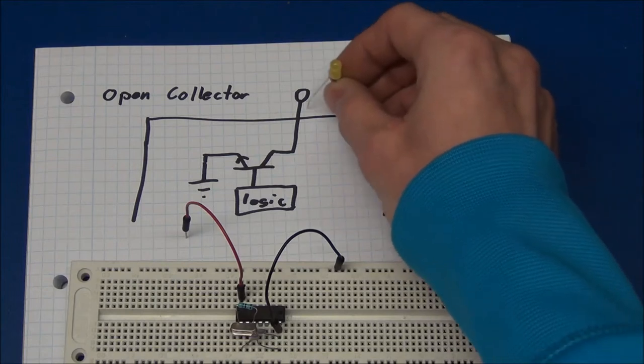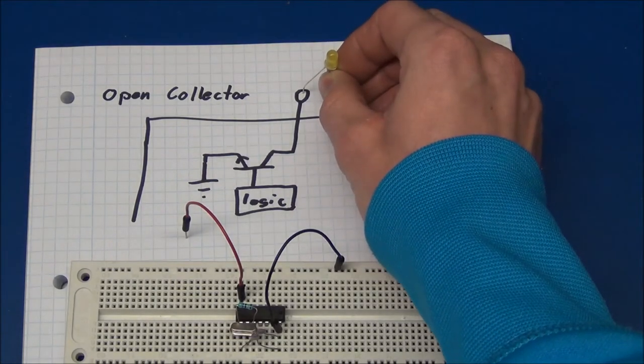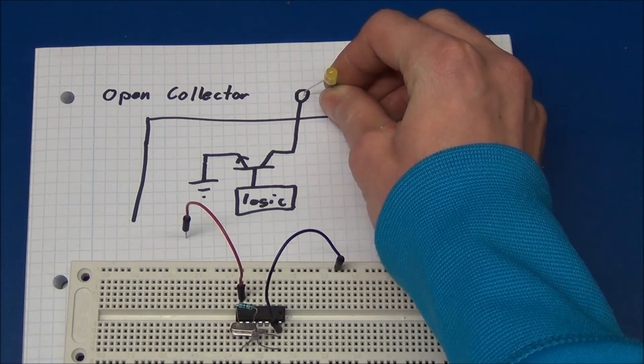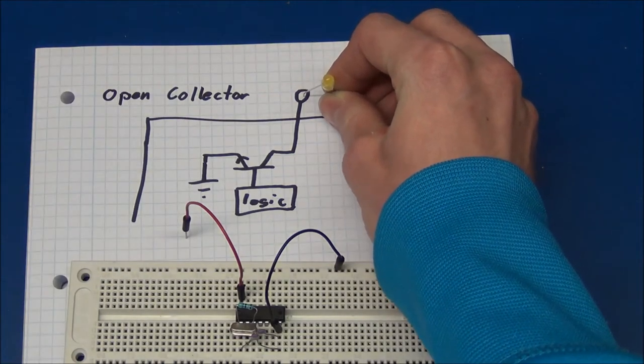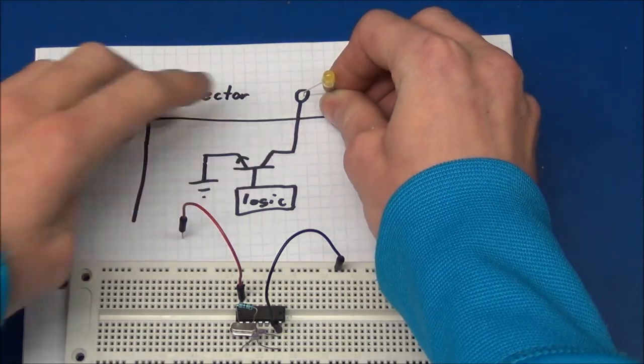So if I took my LED and connected it from the output of the chip to ground, and when this output should be high, well, nothing will happen because no current can get out of the chip.